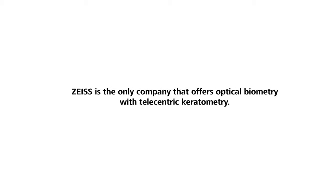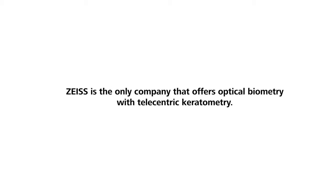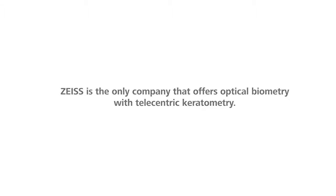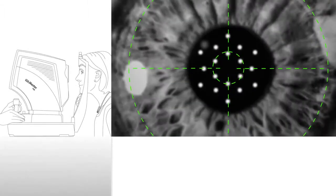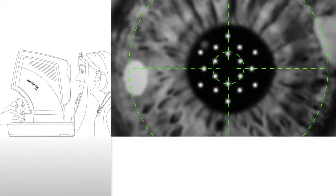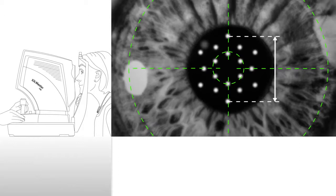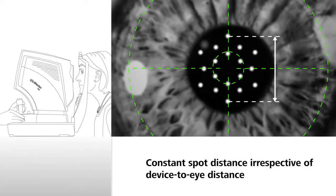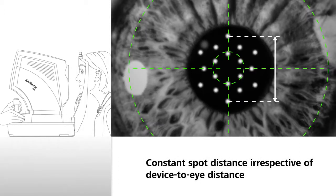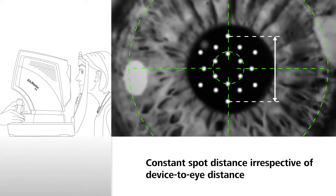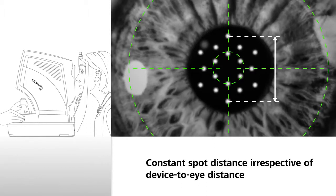Zeiss is the only company that offers optical biometry with telecentric keratometry. Telecentric keratometry of the Zeiss IOL Master 700 uses a smart optical configuration to ensure that spot distances stay constant irrespective of device to eye distance.